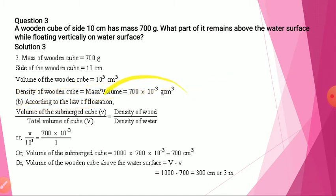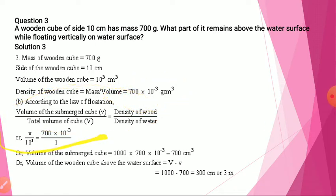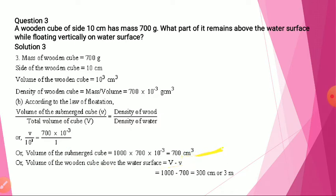Density is mass per unit volume, so from that we can find the density. According to the law of flotation, putting the values, we can find the volume of the submerged cube — that is 700 cubic centimeters. Subtracting this from the total volume, we will find the volume of the wooden cube above the water surface.